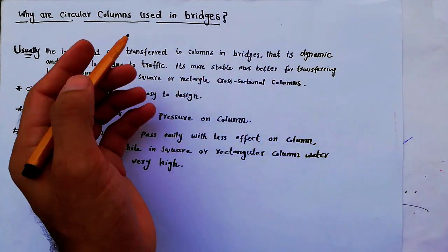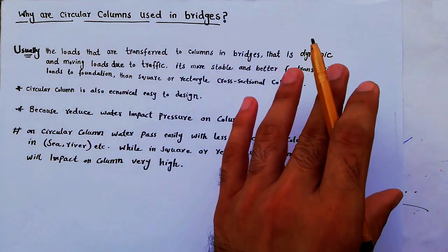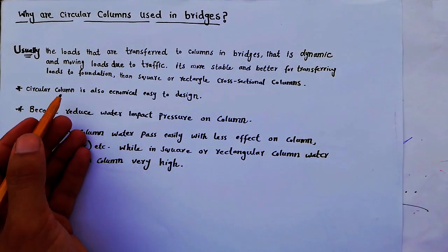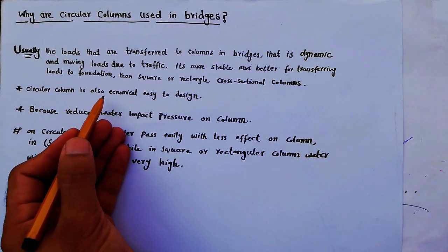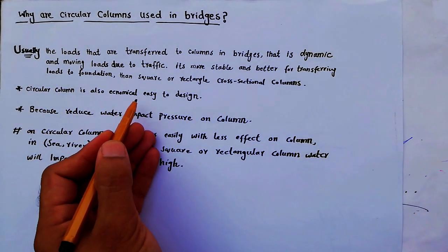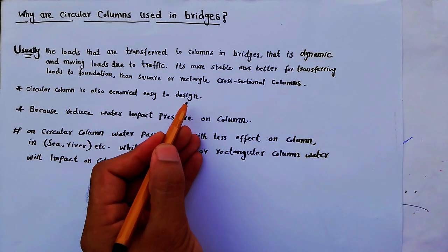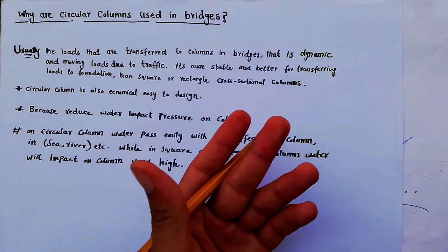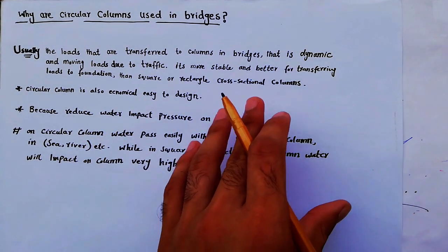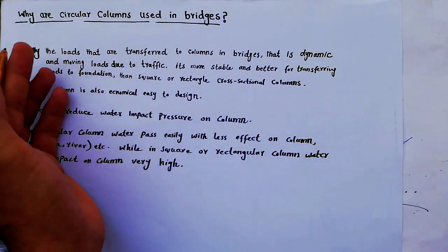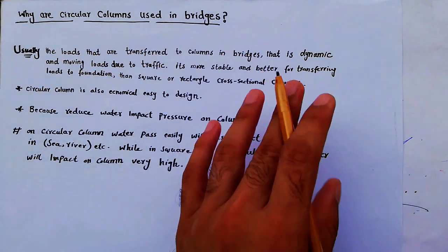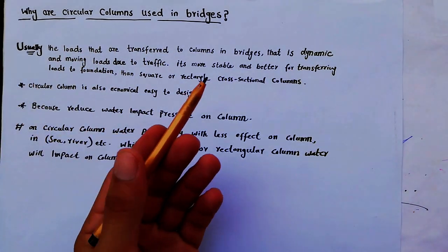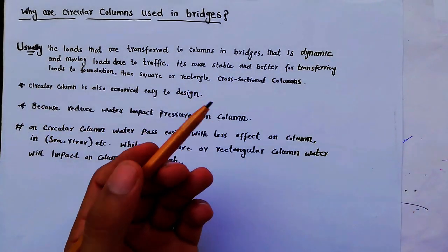Circular columns are also economical and easier to design compared to square or rectangular columns. Therefore it is very important to design circular columns in bridge construction.